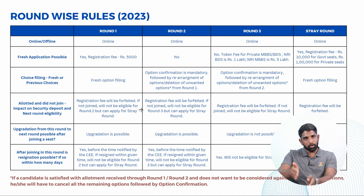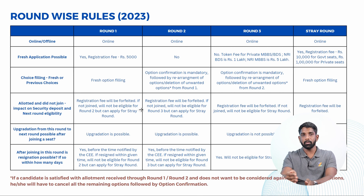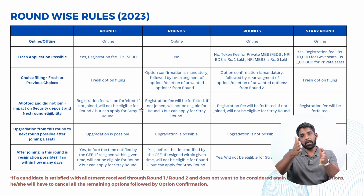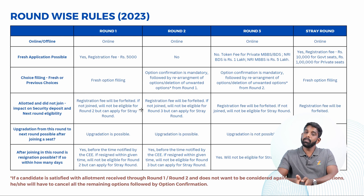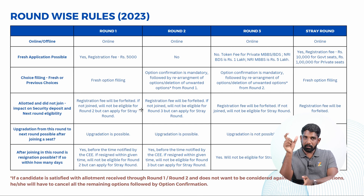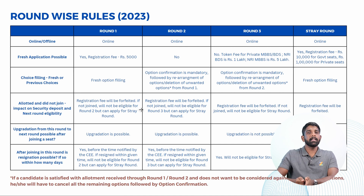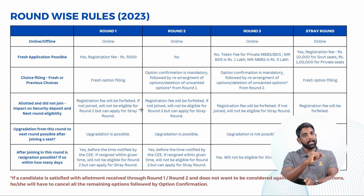However, there is an option to do a fresh application in the Stray Round. If you join the allotted seat, there is an option to upgrade from Round One to Round Two. Resignation is also possible — if you get a better seat in an All India round, you can resign the seat within the given time. After resigning, you will not be eligible for Round Two or Round Three, but you can apply for the Stray Round.